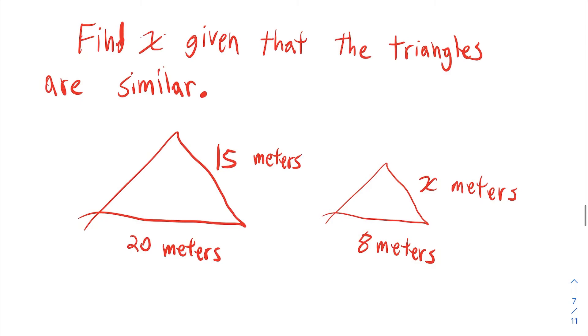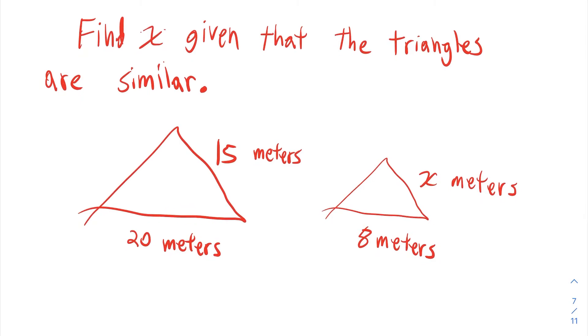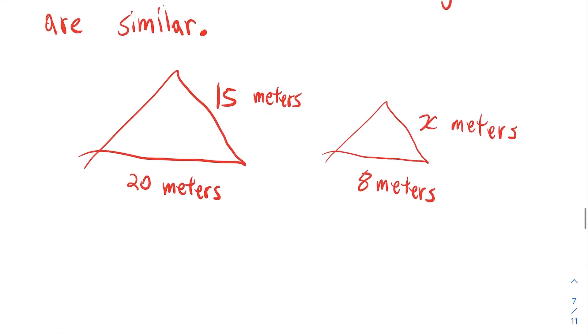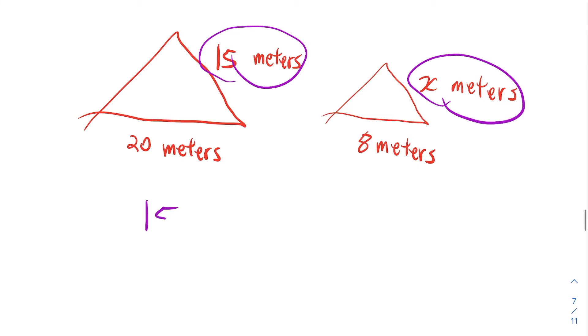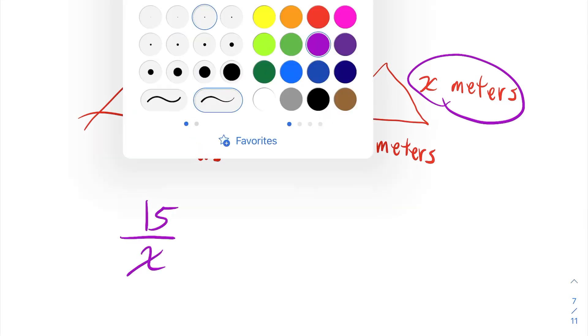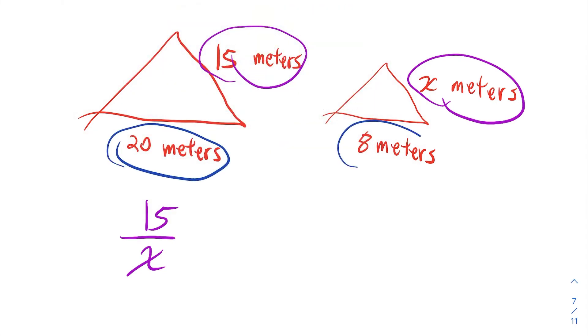Here's a problem. It says, solve for X. Find X, given that the triangles are similar. Well, since the triangles are similar, the ratios of corresponding sides are proportional. Here are two corresponding sides right here. The ratio of those two corresponding sides, which is 15 to X, should be proportional to the ratio of these two corresponding sides, which is 20 to 8.